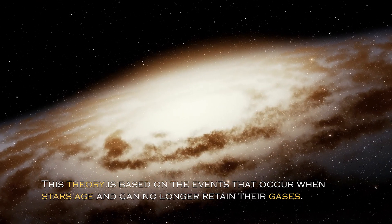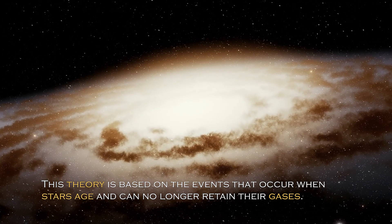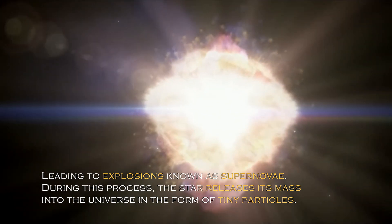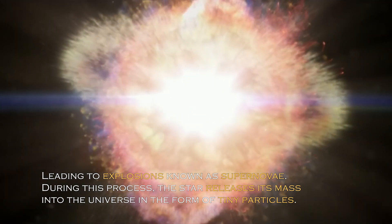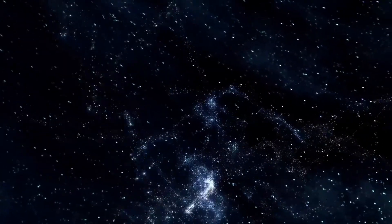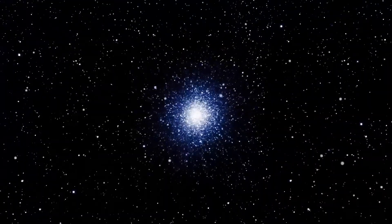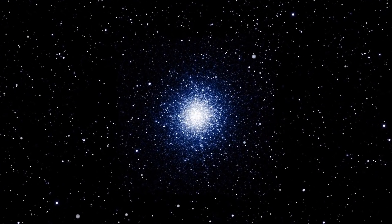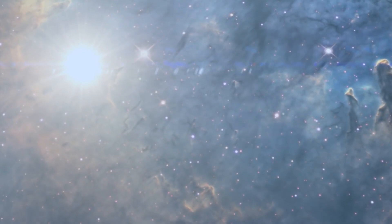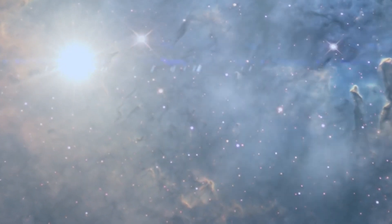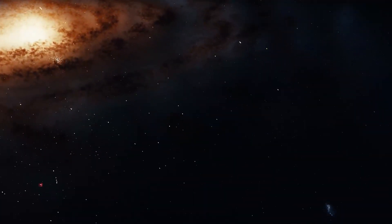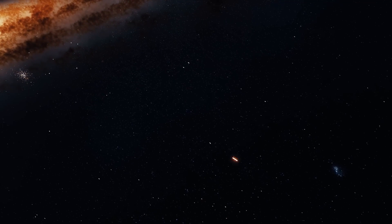This theory is based on the events that occur when stars age and can no longer retain their gases, leading to explosions known as supernovae. During this process, the star releases its mass into the universe in the form of tiny particles. Some people argue that something similar may have happened to these solar systems that suddenly disappeared. Despite this possibility, most of the scientific community doubts this explanation, because stars do not disappear without a trace, especially without a supernova. And the massive disappearance of these trillions of stars should have left a noticeable impact on the universe, including our own Milky Way galaxy.